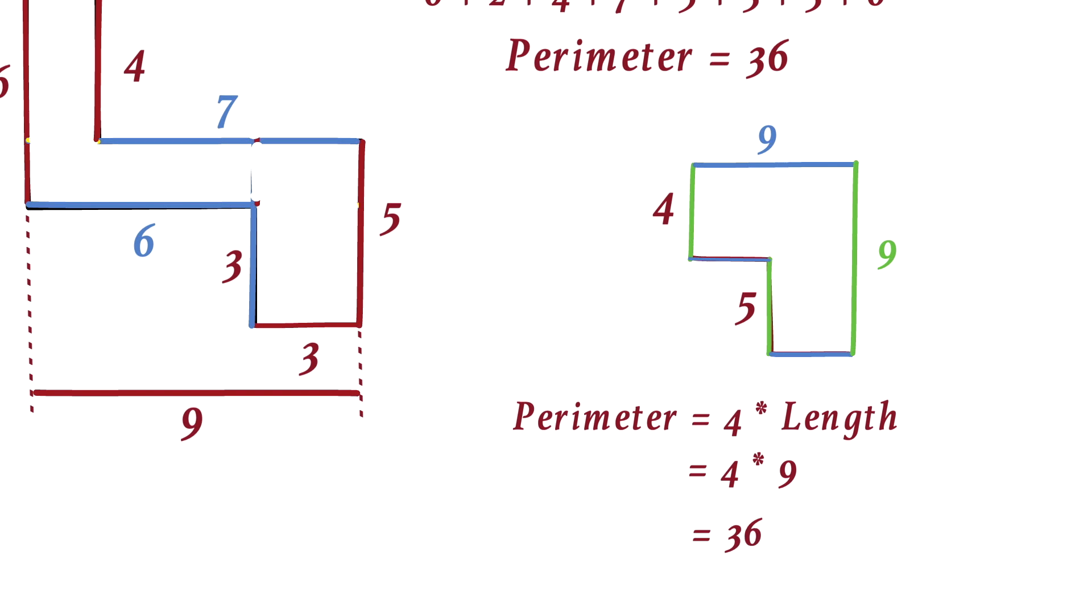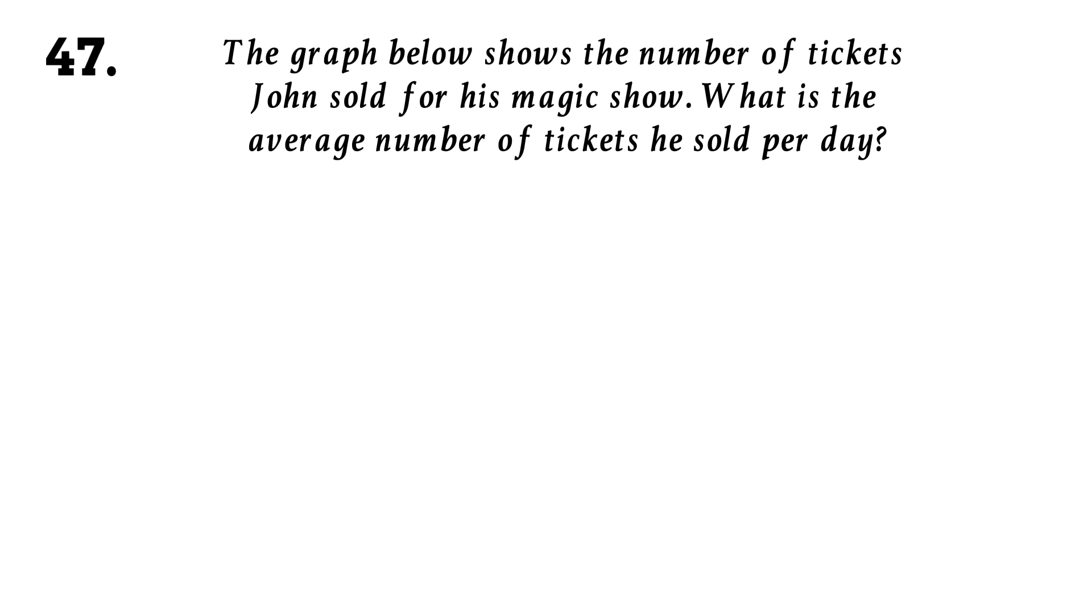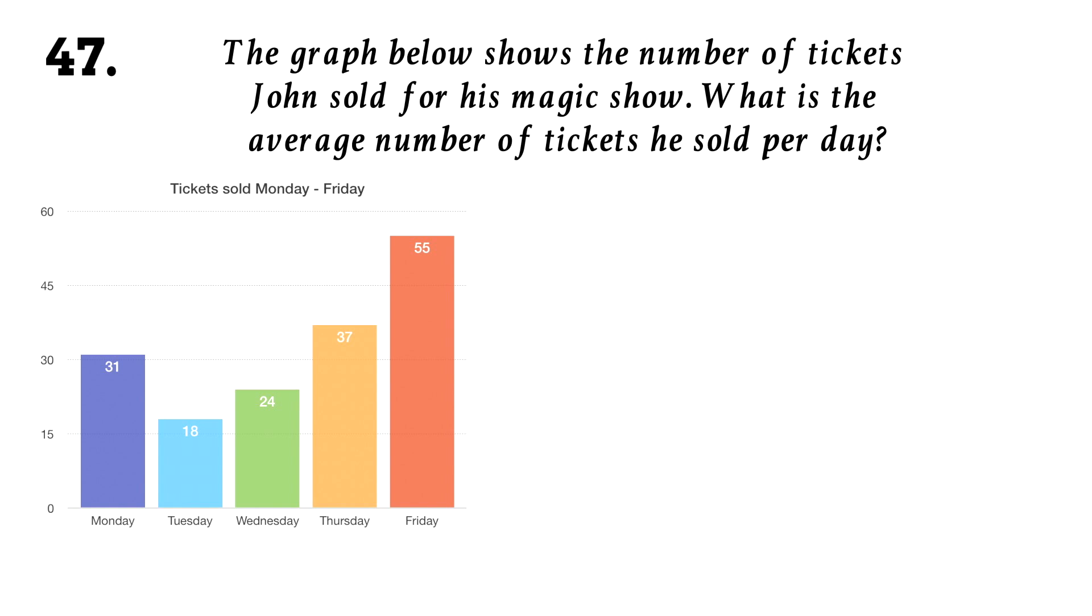Realize that we had the same answer. If the two values were different, let's say 9 and 7, then you will have the perimeter of a rectangle. Question 47. The graph below shows the number of tickets John sold for his magic show. What is the average number of tickets he sold per day?